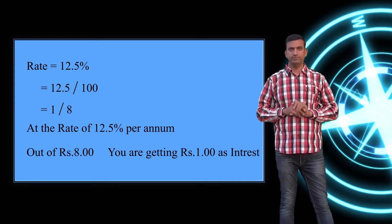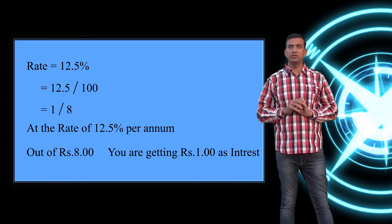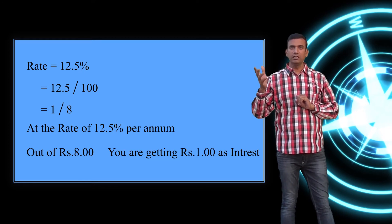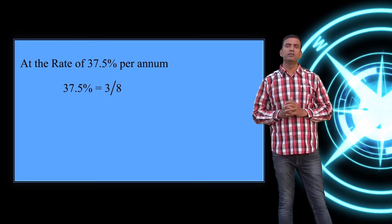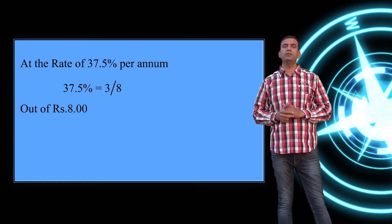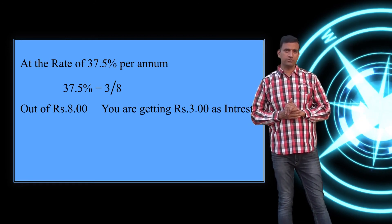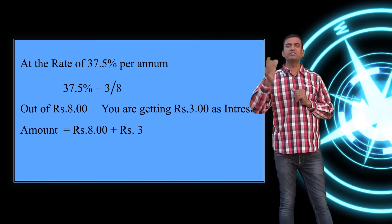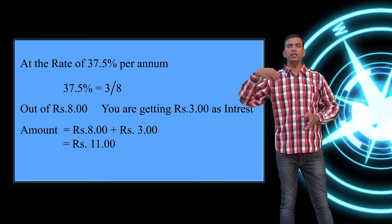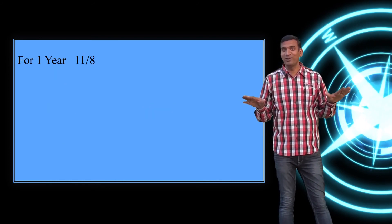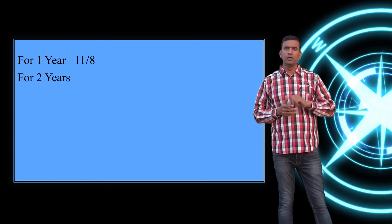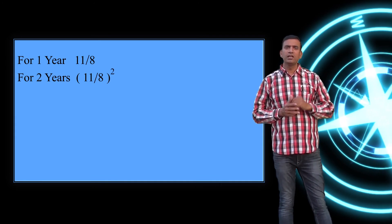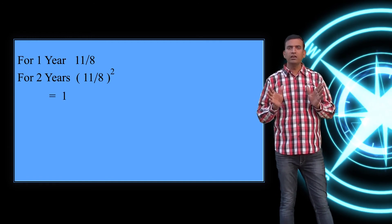Whatever the fraction x/y: if you put y rupees in the bank at that rate, after 1 year you get x rupees as interest. For example, 37.5% = 3/8. So if you put 8 rupees, after 1 year you get 3 rupees interest, making a total of 11 rupees. For a time period of 2 years, square the fraction: (11/8)² = 121/64. So if you put 64 rupees, after 2 years you get 121 rupees.